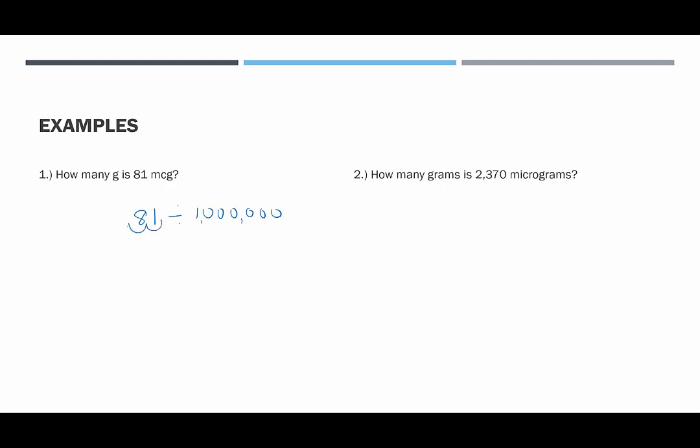two, three, four, five, six. So 81 micrograms is equivalent to 0.000081 grams or 81 millionths of a gram, really small amount of a gram.